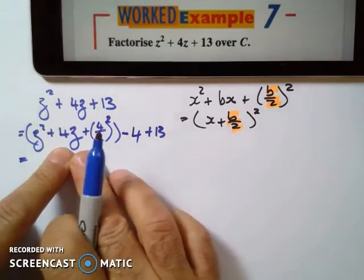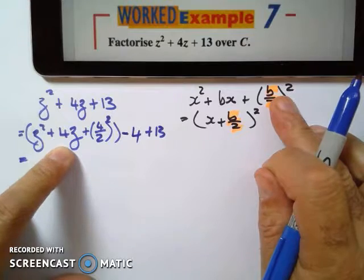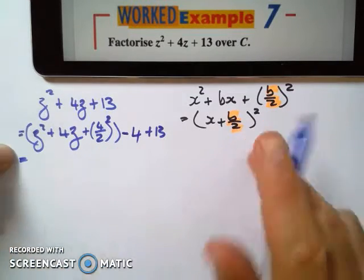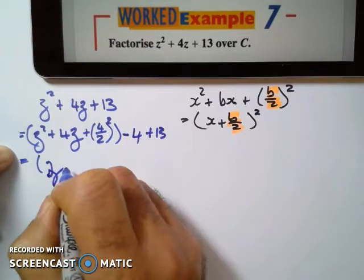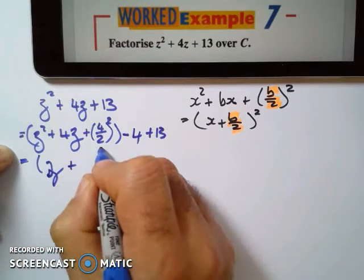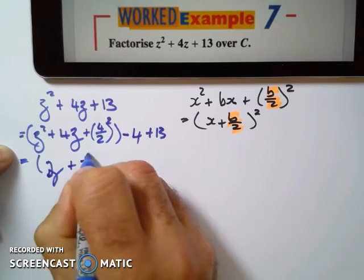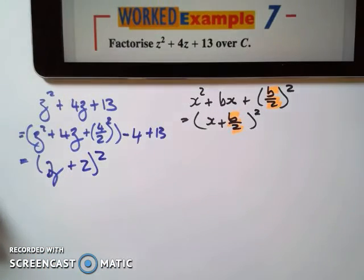Now this is in this form which means I can rewrite this like I've done there. It means that this bracket is z plus 4 divided by 2 is 2 so that equals z plus 2 squared. Minus 4 plus 13 is plus 9.